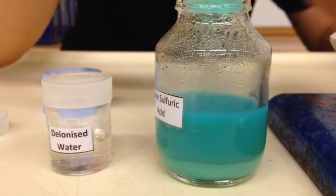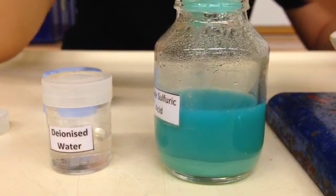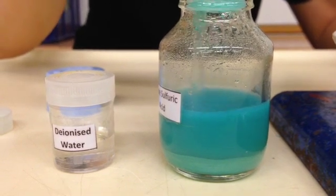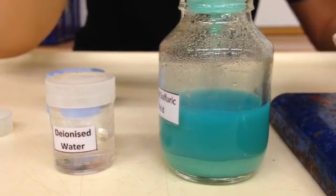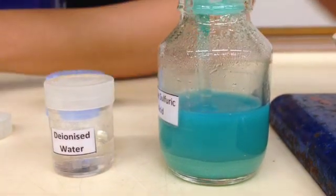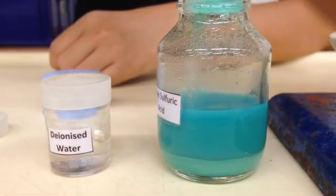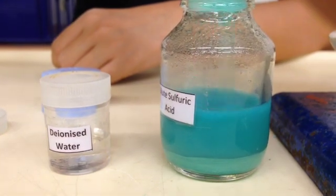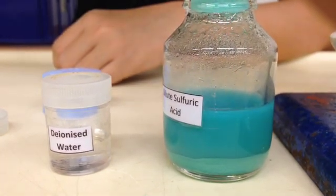So you can see that actually effervescence has more or less stopped already, so this actually indicates that we are reaching the end point of the reaction and you can see that there's quite a lot of green color powder left at the bottom, so this shows that there is indeed excess copper 2 carbonate which is the insoluble reactant and all the acid has actually been reacted away.